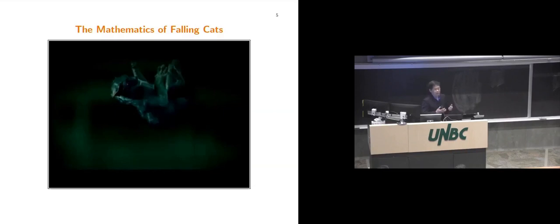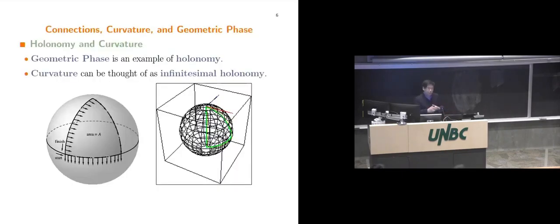Let me start by giving you a flavor for what geometric mechanics is and how geometry plays a role in various mechanical and control problems. The first example is the falling cat. If you take a cat by its legs upside down and drop it, cats have a reputation of always landing on their feet. The cat is able to do this by changing its shape. There's an interesting non-trivial coupling between the shape dynamics and group dynamics of this system. Reduction theory is all about understanding this interrelationship, and geometric control theory aims to leverage those connections.